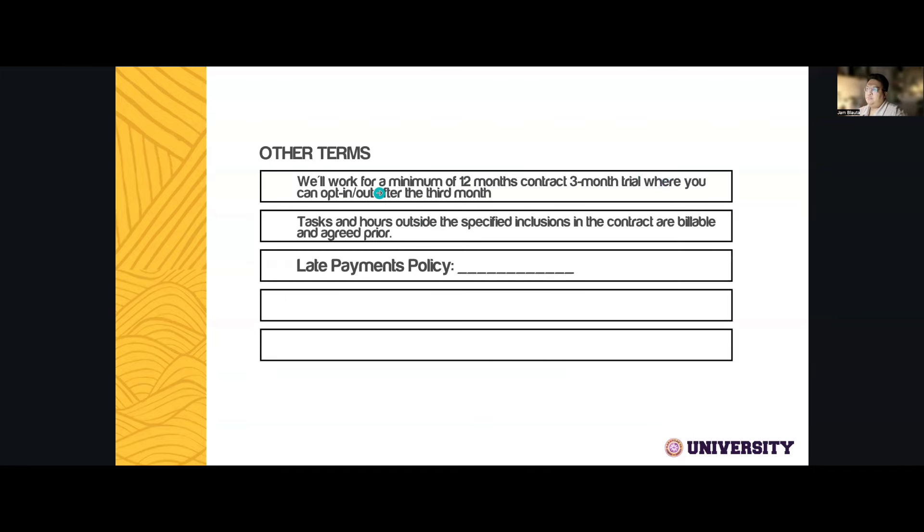Next, do you want to be paid on a monthly basis? Every when? Every last day of the month? 30th of the month? Or do you want to be paid on a weekly basis? Every Friday, you put here. Identify that now. Just choose one. But me, I recommend 1st and 15th. Next, other terms. Like, for example, we'll work for a minimum of 12 months. Contract, 3-month trial where you can opt in and out after the third month. And then tasks outside the specific inclusions in the contract are billable and agreed prior. And then late payment policy, what I put there is that every time their payments are late, I charge them with additional percentage per day. So, 5% per day, I put there. And then you can add more if you want.